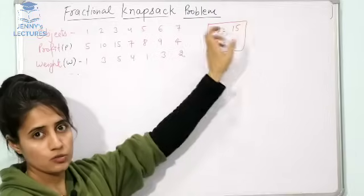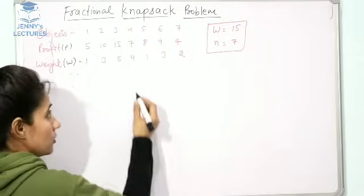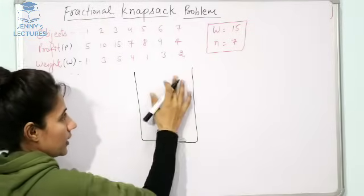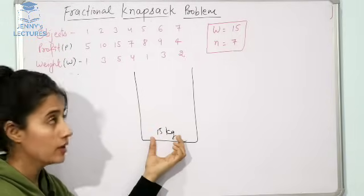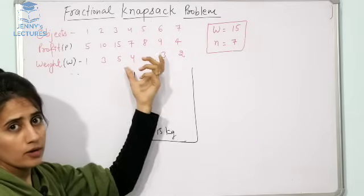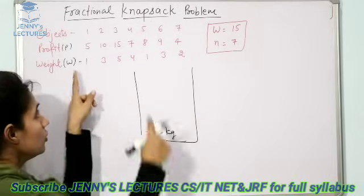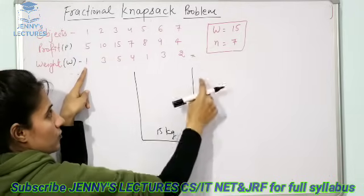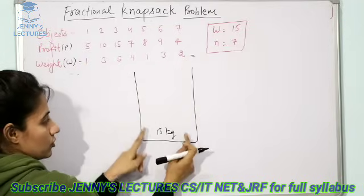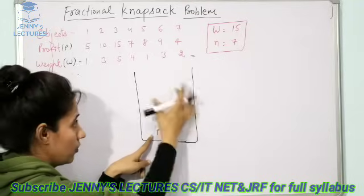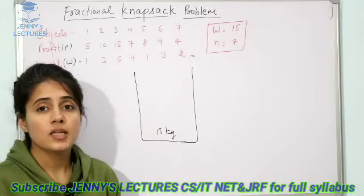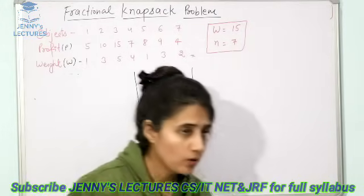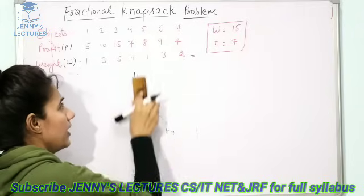The total weight given is 15 kg. Suppose I am taking the weight in kg — total items are 7. We have one bag having capacity 15 kg, or you can say one container having capacity 15 kg. Now you have to select items such that you will get the maximum profit. We cannot select all the items because the total weight of all items would be greater than 15, so maximum capacity is 15 kg.